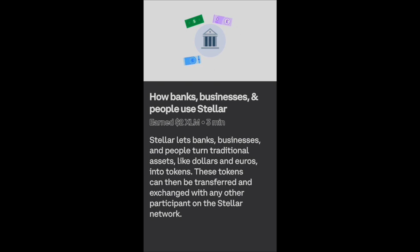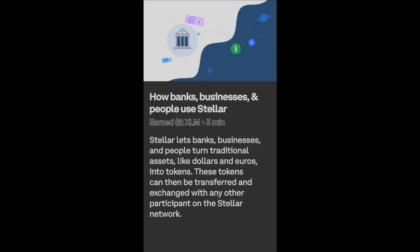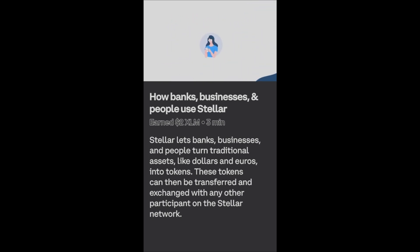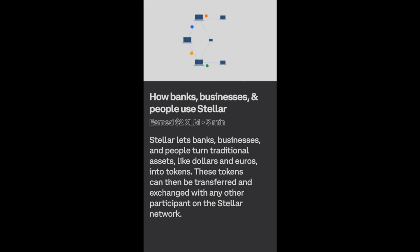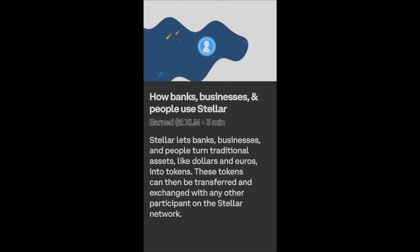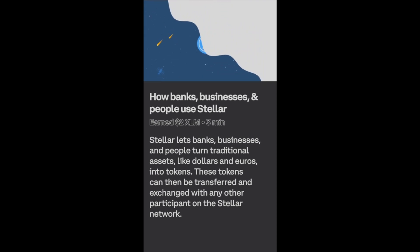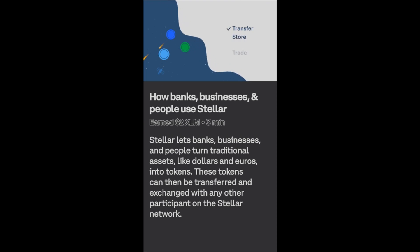Now the bank can take its real-world assets — like dollars, euros, or pounds — and turn them into Stellar tokens. Their customers can deposit a US dollar in Main Street Bank and get a US dollar token on Stellar in return. All Stellar tokens are exchangeable, and since exchanges happen on the Stellar network, they only take a few seconds and cost a fraction of a penny. Anyone can transfer, store, and trade Stellar tokens just like lumens, anywhere on the Stellar network.